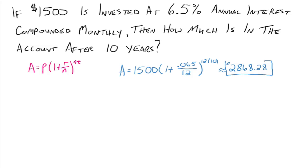If you don't get that number, you need to try again and make sure you get everything entered in correctly in your calculator. So if we put in $1,500 into an account that earns 6.5% annual interest compounded monthly, then after 10 years, it'd be $2,868.28.